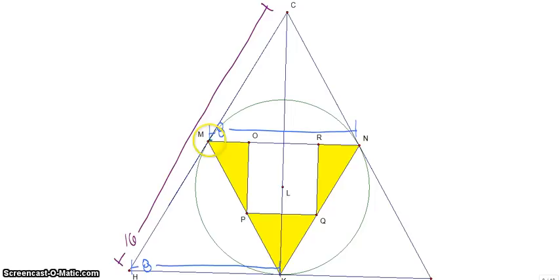We're going to insert a temporary variable of X. MO is X, RN is X because of all the symmetry we have. In this yellow triangle, triangle MOP, we have a 30-60-90 triangle. X is the short leg, so the long leg is X root 3.